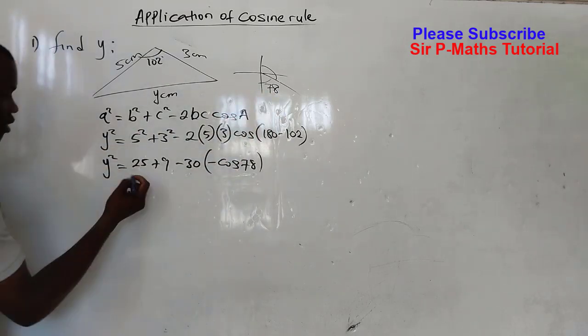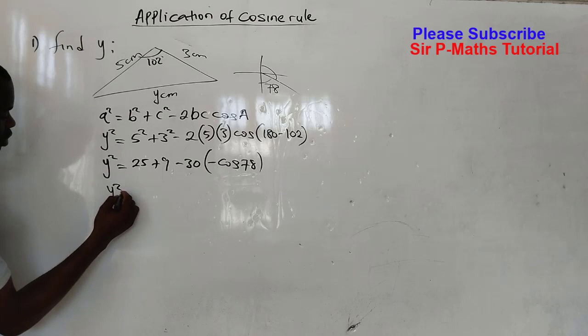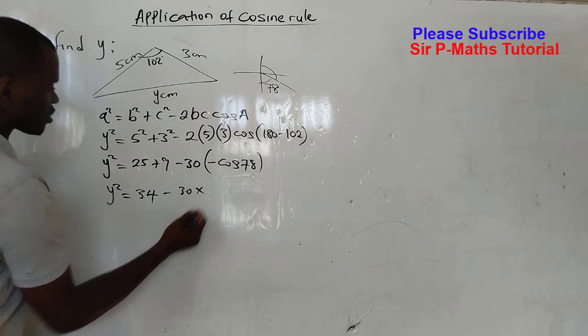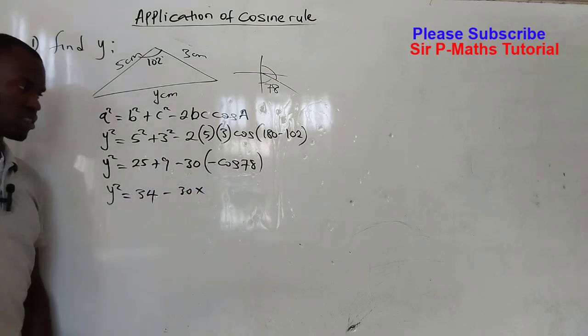Then let's continue. I'll have y² = 34 - 30 times... let's get the value of cos 78.